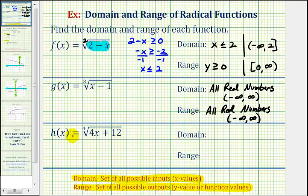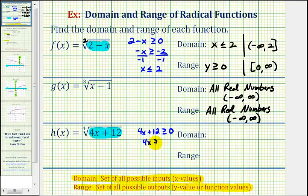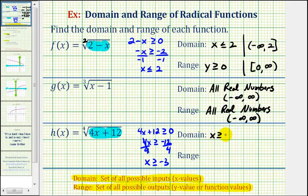Now for the last function, we have h of x equals the fourth root of 4x plus 12. And because the index is even, our radicand, 4x plus 12, must be greater than or equal to zero. So we'll go ahead and solve for x. We'll subtract 12 on both sides, then divide by 4. So we have x is greater than or equal to negative 3, which would be the domain of our function. Using interval notation, we'd have the interval closed on negative 3 to positive infinity.